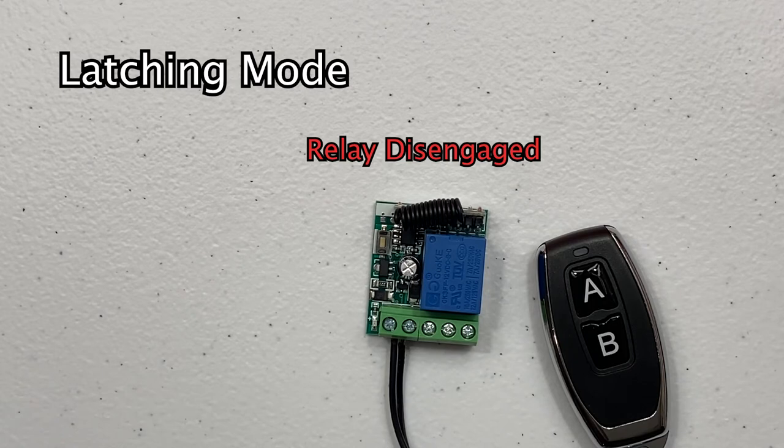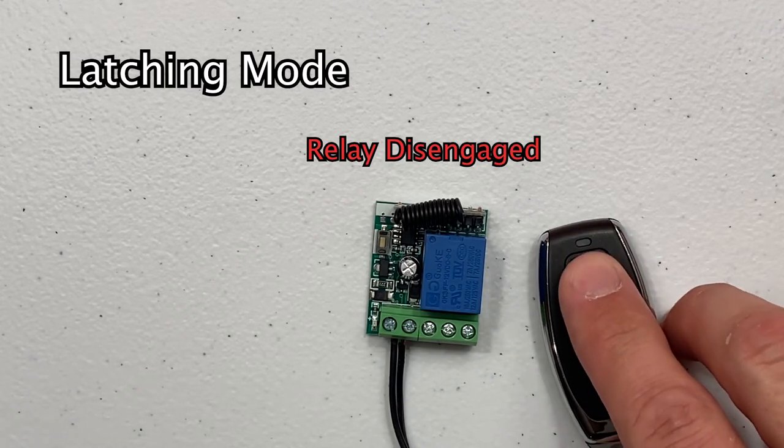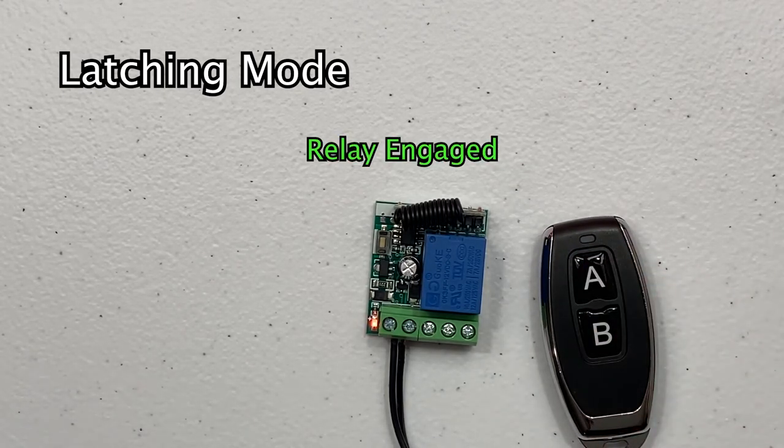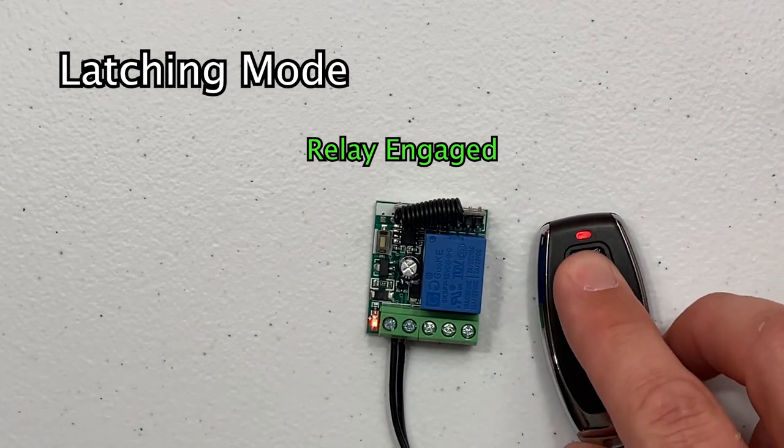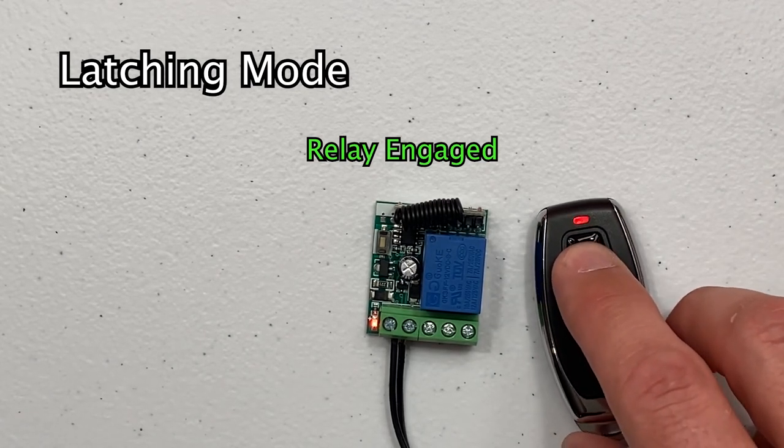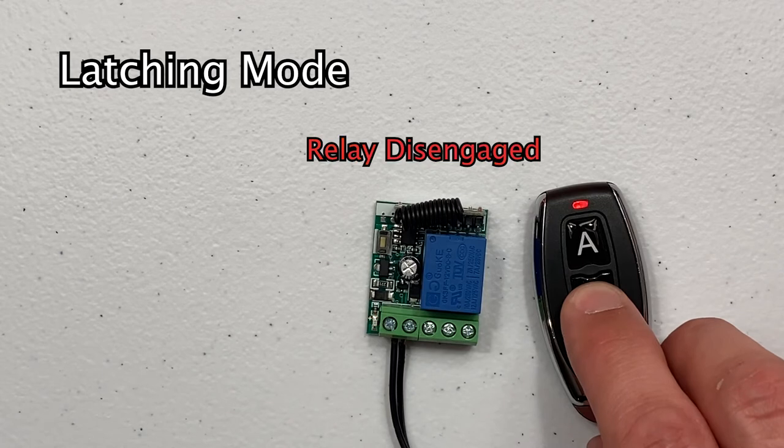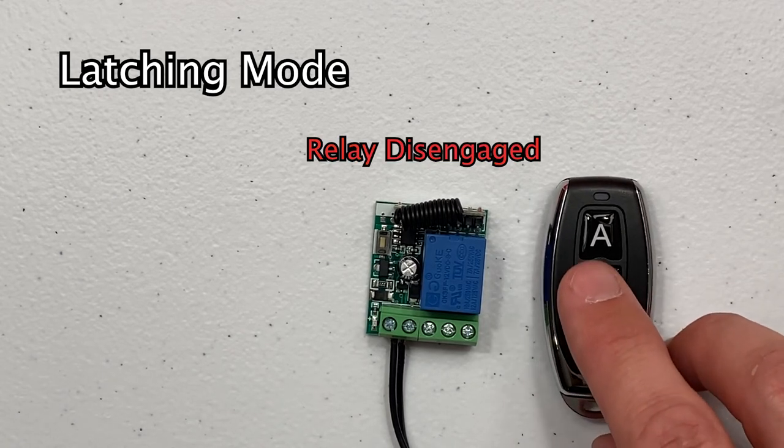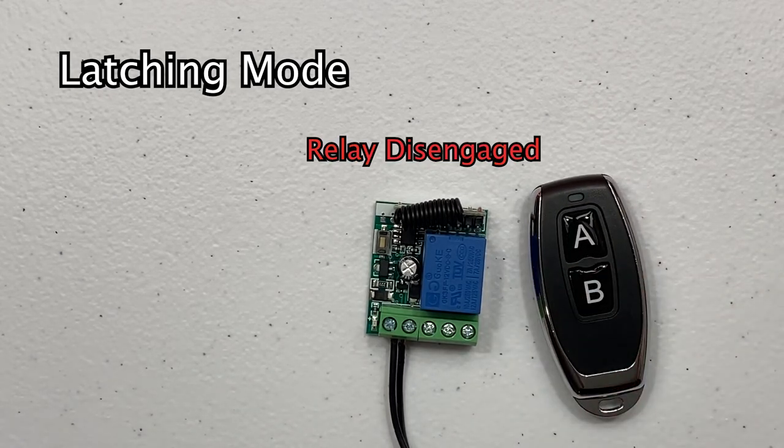Now, pressing the on button will latch the relay into on mode and repeated presses of that button will not change the state. Pressing the off button will disengage the relay and repeated presses of the off button will not change that state either.